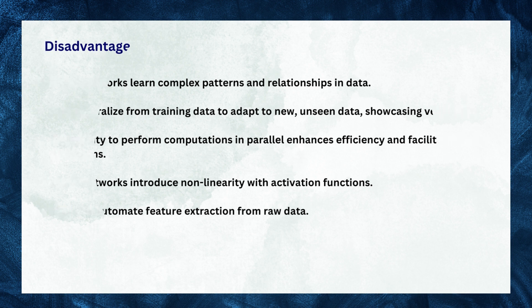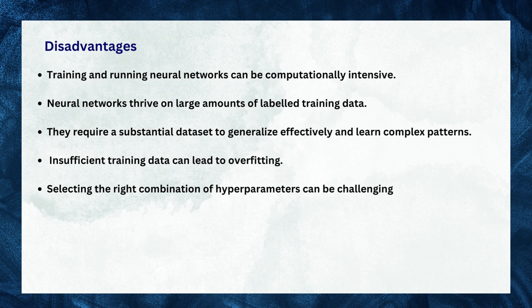While neural networks offer many advantages, they also come with certain limitations. Training and running neural networks can be computationally intensive, especially for large models with numerous layers and parameters. Neural networks thrive on large amounts of labeled training data and require a substantial dataset to generalize effectively and learn complex patterns. Insufficient training data can lead to overfitting.